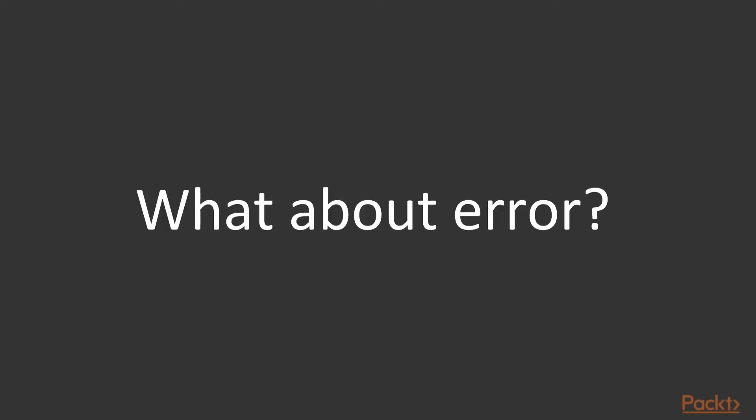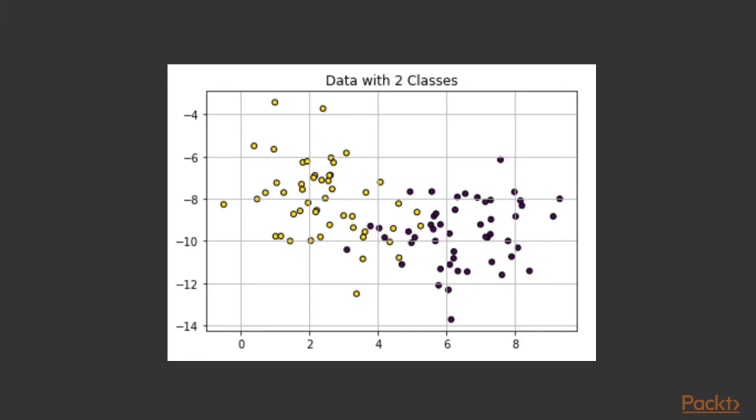So the second part that we want to talk about is what about error? In this case, in the previous case, it was possible to perfectly separate these two classes. But a lot of times that's not the true case. So when you work with real data, there's noise and you can't do it perfectly.